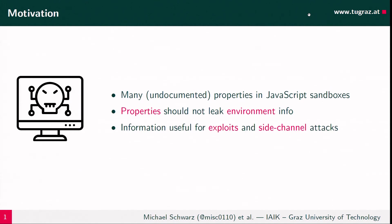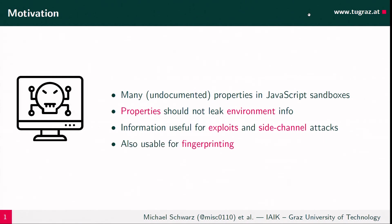If we have that information, we could use it to target our exploits. If we have browser exploits that exploit flaws in the JavaScript interpreter, the just-in-time compiler, or the browser, we can better target them if we know which environment, hardware, and software users are using. The same is true for side channel attacks, where we need a lot of information about the environment to mount a successful attack.